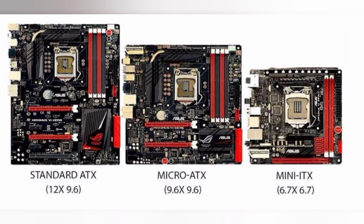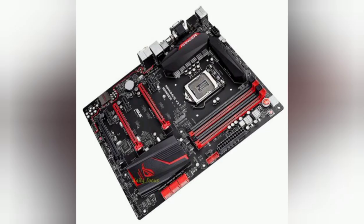Now, micro ATX versus ATX comparison in terms of RAM slots. RAM slots are the first thing that needs to be compared. ATX motherboards support up to four RAM slots, and each of them can accommodate RAM cards of up to 32 GB. Both ATX and micro ATX motherboards can provide enough additional memory space to run most games, while ATX motherboards can provide larger memory space overall.